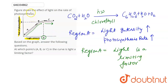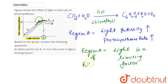At point B also, as light intensity increases, photosynthesis rate is also increasing. Point B is intermediate between A and C. So at point B as well, light is acting as a limiting factor, because as light increases, photosynthesis rate keeps increasing.